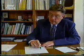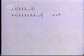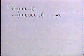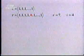Here's an example. 1, 1, 1, 1, 1, 1 is a word in this code. Now here we have received an 8 in position 4. So the size of the error E equals 7, and the position of the error i is 4.